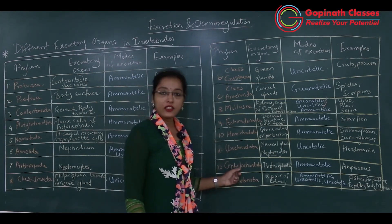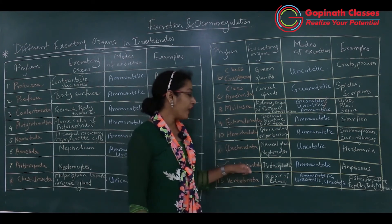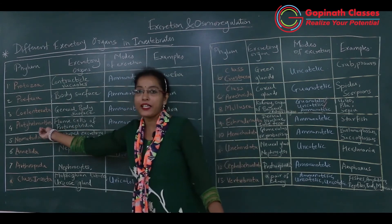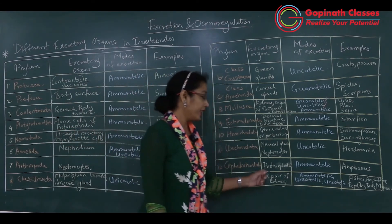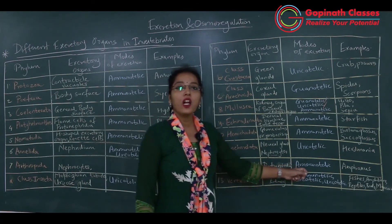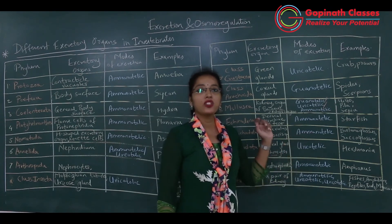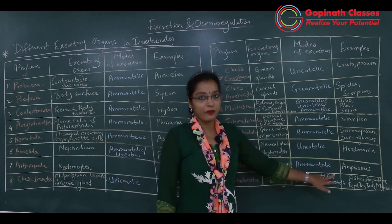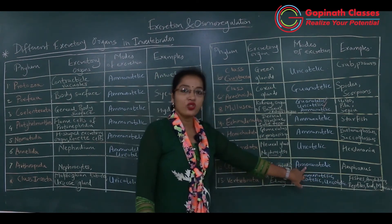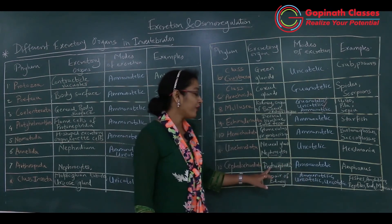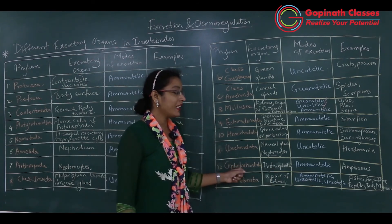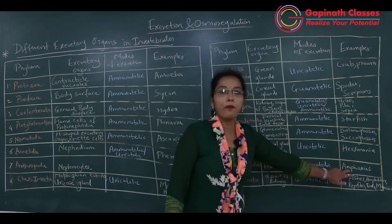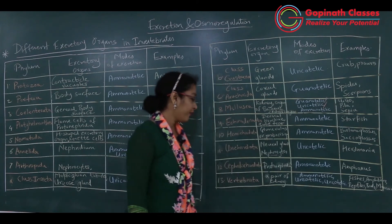Cephalochordates have excretory organs called protonephridia, similar to Platyhelminthes. Protonephridia remove nitrogenous waste out of the body by ammonotelic method — they excrete nitrogenous waste in the form of ammonia. Example: Amphioxus.